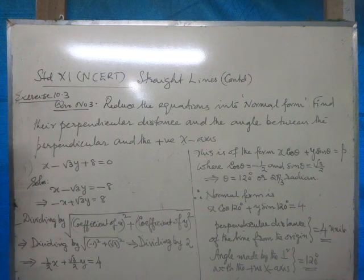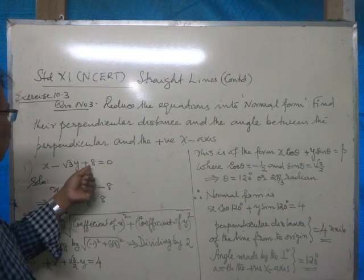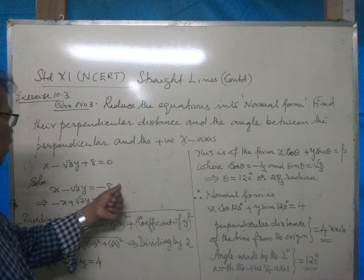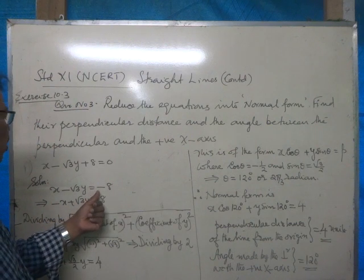So, the solution: this plus 8 is shifted to the right side. x minus root 3y is equal to minus 8.